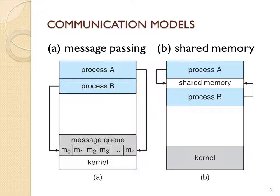In shared memory, you have two very isolated processes and the operating system decides to remove the restriction of keeping them separate, allowing processes to access the same memory space. There is a shared area of memory that belongs to one of the processes or to the operating system, but either way, more than one process is accessing that memory space.